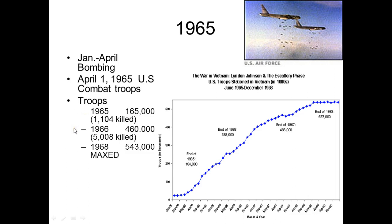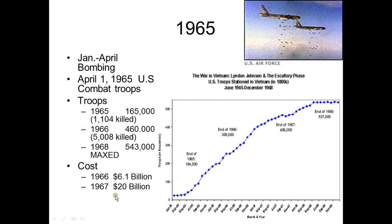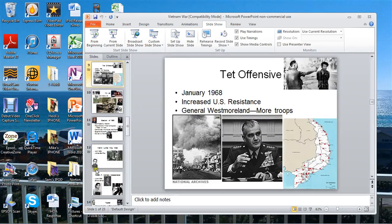The cost escalated rapidly as well — 6.1 billion dollars in 1966 and 20 billion in 1967. My dad actually arrived in 1966. We will stop there and continue with the Tet Offensive in the next lecture. Stay classy, Vandalia.